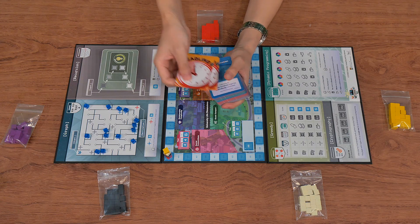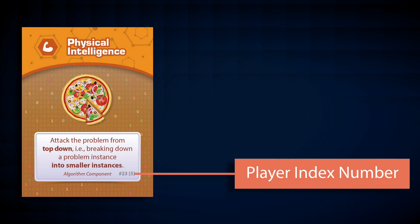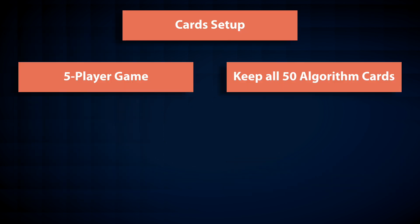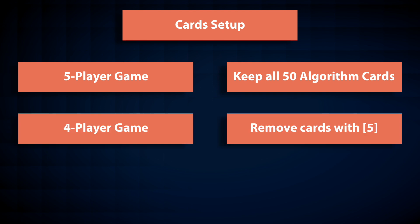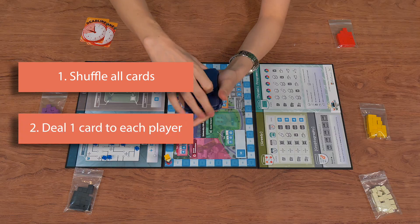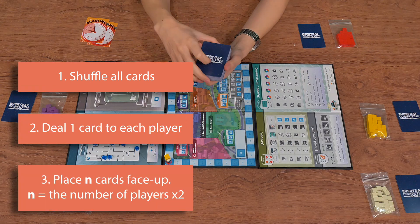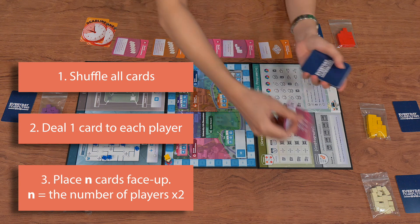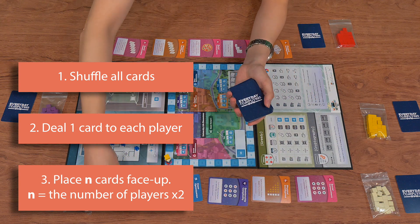Now let's set up the cards. First of all, take out the two deadline cards. Depending on the number of players in your game, there are different rules for setting up the algorithm cards. Do you remember the player index number on the algorithm cards? If there are five players, keep all the cards. If there are four players, remove all the cards with index four and five — in other words, just keep the cards with index three. After that, shuffle all algorithm cards and deal one card to each player, facing down. Then put some face-up cards beside the boards — the number of face-up cards should be twice the number of players. For example, if you have five players, place ten cards facing up.